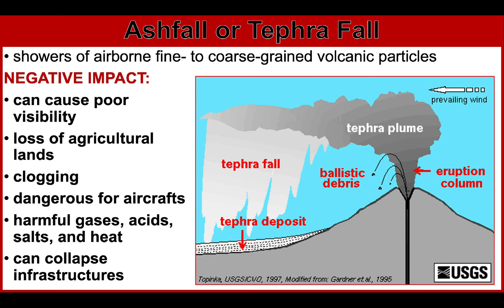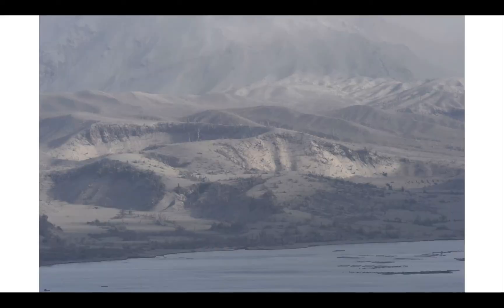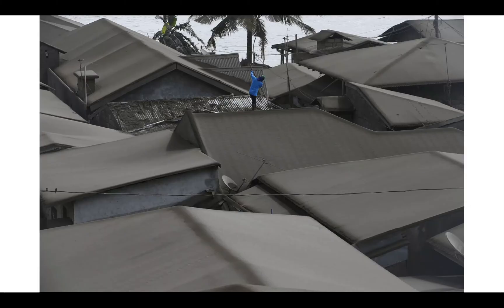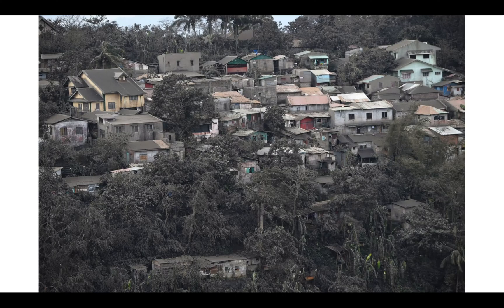The pictures I'm going to show are taken from the Taal Volcano eruption last year. As you can see, vegetation near the site of Taal Volcano was burned. This shows a resident cleaning ash from his roof, and this figure shows the roofs of homes in Tagaytay on January 14.